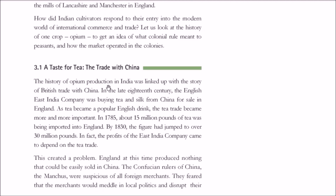This story started as a consequence of what was happening elsewhere — in China and England. The history of opium is linked with British trade in China. In the late 18th century, the English East India Company was buying tea and silk from China and sending it to England.